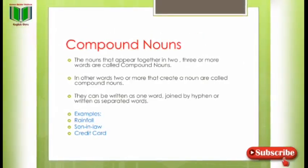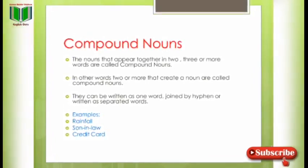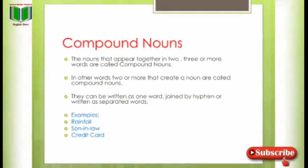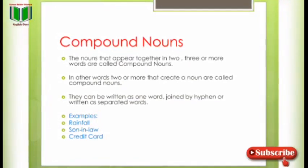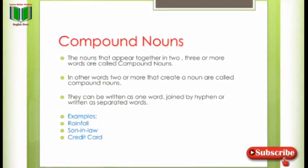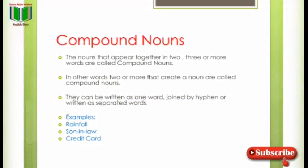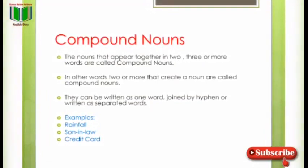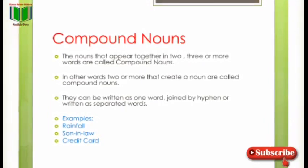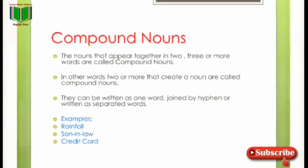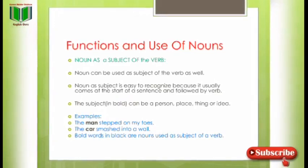Compound nouns — the nouns that pair together into two or more words are called compound nouns۔ Compound کا word مرقب ہوتا ہے — ایسے نام جو دو، تین یا اس سے زائد الفاظ کے ہوں۔ They can be written as one word, joined by hyphen, or as separated words. Examples: 'rainfall' (اکٹھا)، 'sun-in-law' (hyphen کے ساتھ)، 'credit card' (separate) — یہ سب compound nouns ہیں۔